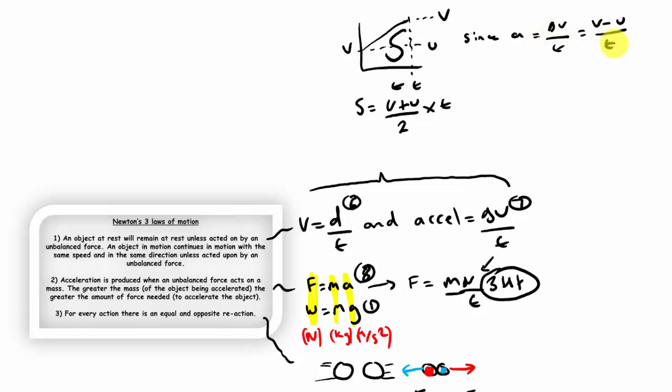Acceleration is equal to change in velocity divided by time, which is also v minus u over t. Rearranging that for time would give us v minus u over a. Subbing that in for t gives us v plus u divided by 2 times v minus u times a.